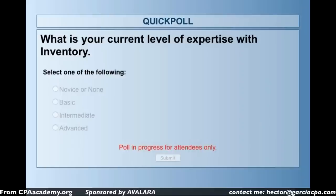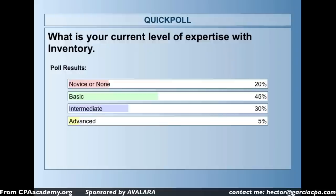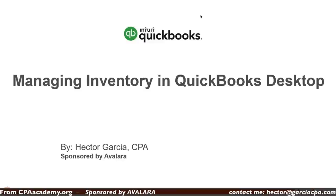The polling question is up for about 30 seconds. We have about 91% of votes so far, 20 seconds left — there's no right or wrong answer. Based on the results: about 20% are brand new, 45% basic, 30% intermediate, and 5% advanced. So we're going to stay in the basic-to-intermediate area to try to satisfy as many folks as possible.